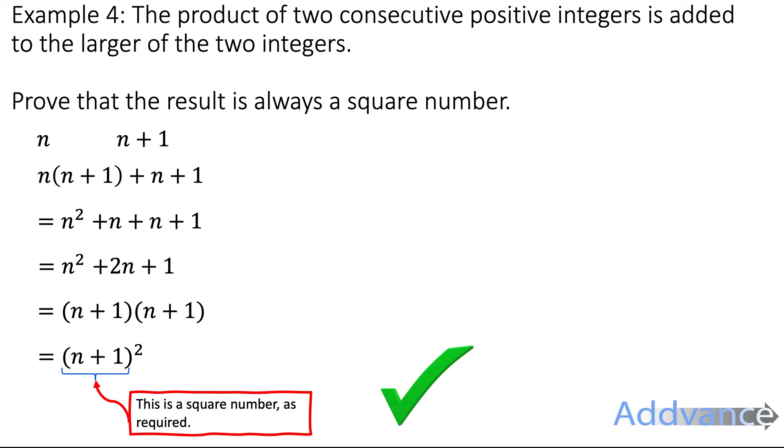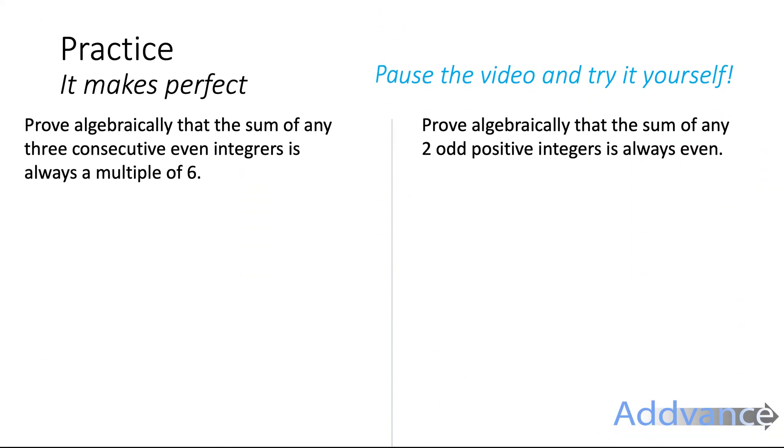This is quite a tricky topic. So you might want to re-watch the video a few times, so you really get an idea of the logical steps that are involved. There's some practice questions for you to try here. Prove algebraically that the sum of any three consecutive even integers is always a multiple of 6. And prove algebraically that the sum of any two odd positive integers is always even.